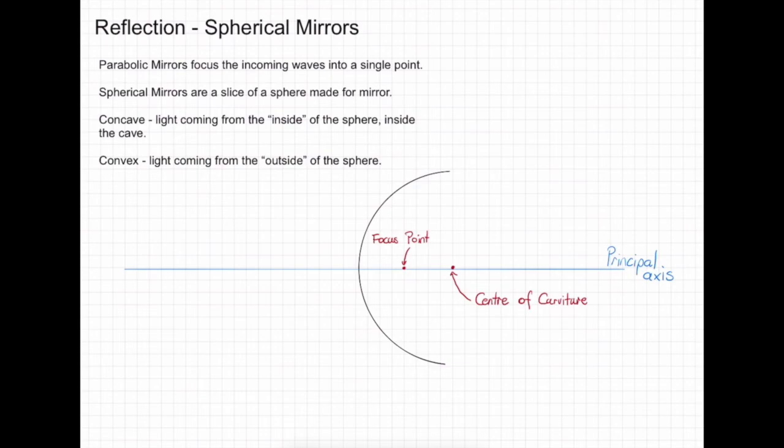So in summary, we've briefly talked about parabolic mirrors, and started our look into spherical mirrors. We've discussed what a concave and a convex mirror is, and we've also set up the basics of a ray diagram. In the next video, we're going to be going through the mirror equation, and the derivation of that. Thanks for watching. See you in the next video.